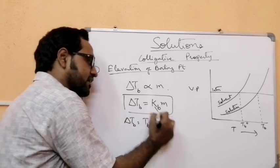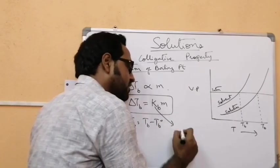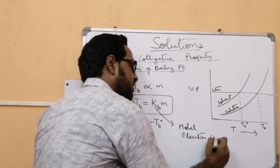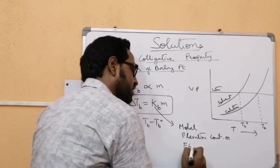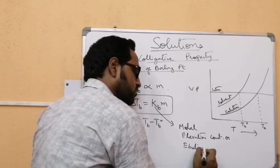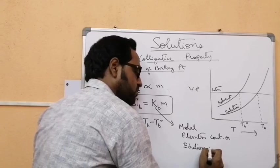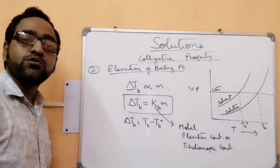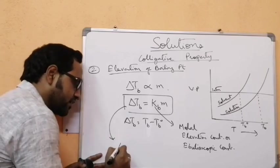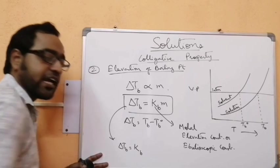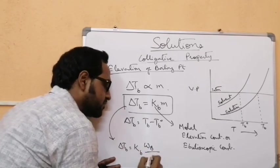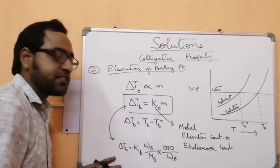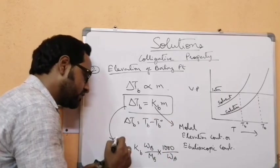The constant Kb is called the molar elevation constant or ebullioscopic constant. The final expression is ΔTb = Kb × (W_B / M_B) × (1000 / W_A), which comes from the definition of molality. From this expression, we can also find out the molecular weight of the solute — whether it is sucrose, glucose, or urea.